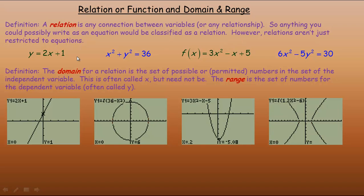I have three examples here of equations. y equals 2x plus 1; x squared plus y squared equals 36; f of x — remember f of x is the same as y, or whatever you want to call your dependent variable — f of x equals 3x squared minus x plus 5. And another one: 6x squared minus 5y squared equals 30.